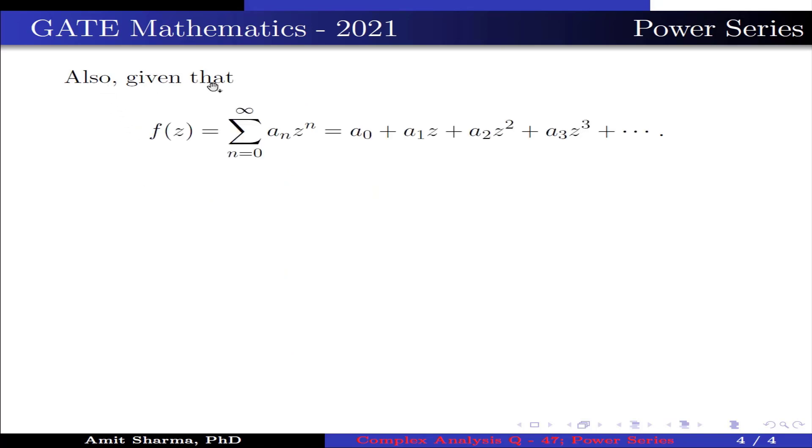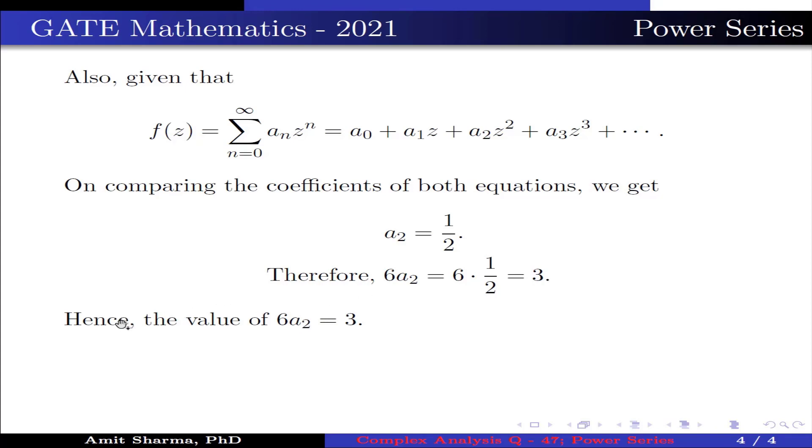Also, f(z) = Σ(n=0 to ∞) aₙzⁿ = a₀ + a₁z + a₂z² + a₃z³ + ... Comparing coefficients of both equations, we get a₂ = 1/2. Therefore, 6a₂ = 6 × 1/2 = 3. Hence, the value of 6a₂ is 3.